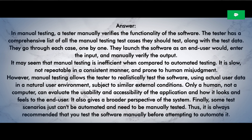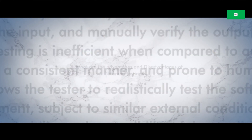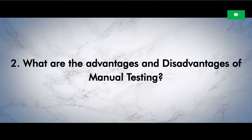However, manual testing allows the tester to realistically test the software using actual user data in a natural user environment, subject to similar external conditions. Only a human, not a computer, can evaluate the usability and accessibility of the application and how it looks and feels to the end-user. It also gives a broader perspective of the system. Finally, some test scenarios just can't be automated and need to be manually tested. Thus, it is always recommended that you test the software manually before attempting to automate it.